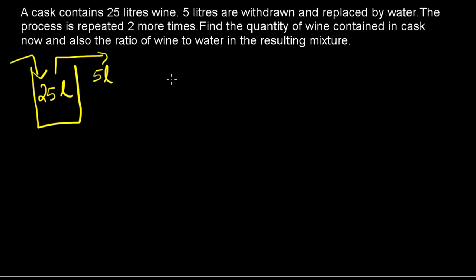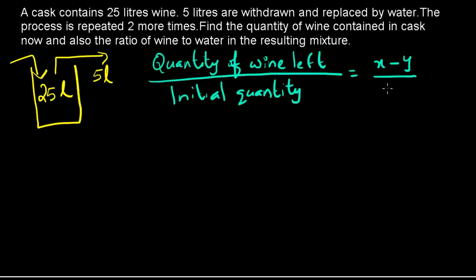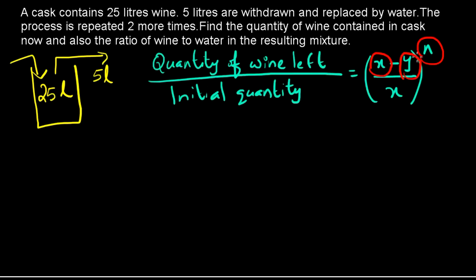We have to find the quantity of wine contained in the cask now, and the ratio of wine to water in the resulting mixture. For these types of questions, we have the shortcut formula: quantity of wine left to the initial quantity is given as ((x - y) / x)^n, where x is the initial quantity, y is the quantity withdrawn, and n is the number of times the process is repeated.